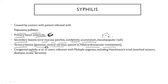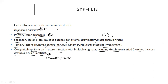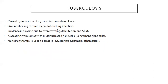The skin is elevated and it's a granuloma. The central nervous system and cardiovascular system are also involved. Congenital syphilis is an in-utero infection with multiple stigmata, including Hutchinson's triad: notched incisors, deafness, ocular keratitis, and mulberry molars. This is caused because of Treponema pallidum.